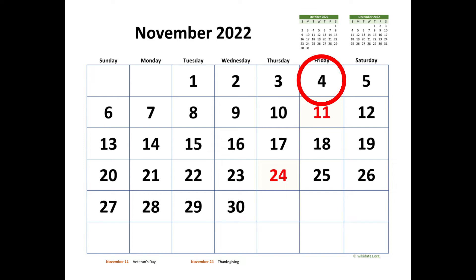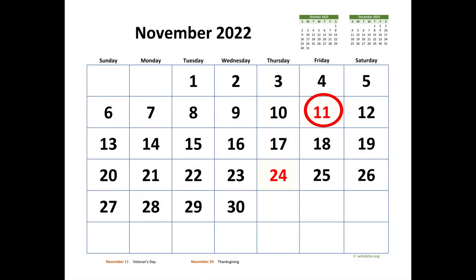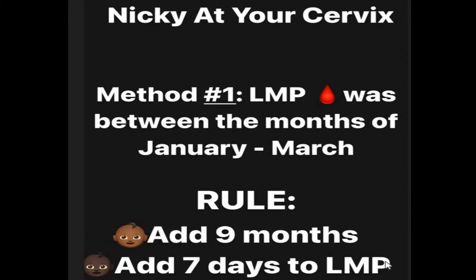To complete and finalize the due date, we add seven to the first day of the last menstrual period. Our LMP day was four, so four plus seven gives us eleven. We now know that the due date is November 11, 2022. It's pretty simple, and you do the same thing if the first day of your LMP started in January or in March.